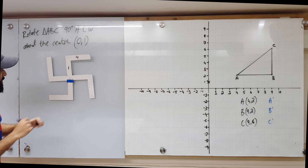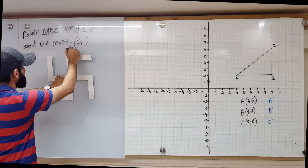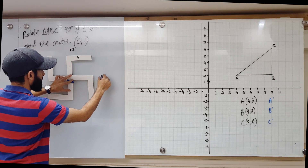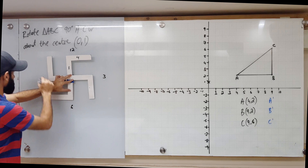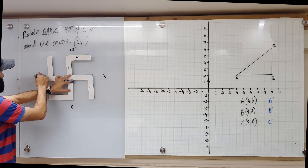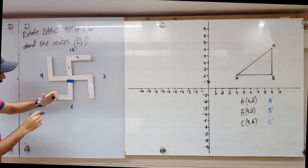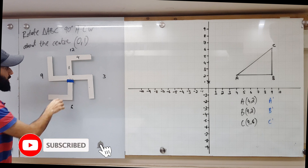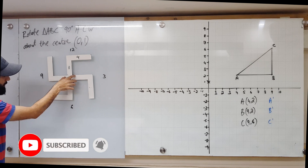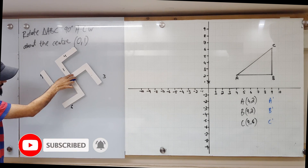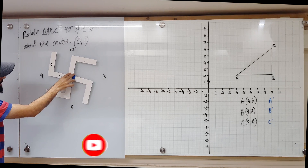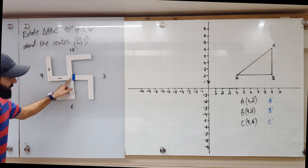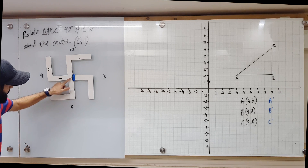Let's write the numbers that you see on a clock: 12, 3, 6, 9. Now let's see what happens once I rotate this 90 degrees anti-clockwise. Here's the center.